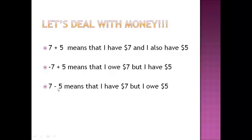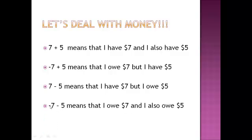Seven minus five: the positive sign is in front of seven and the negative sign is in front of five, which means I have seven dollars but I owe five dollars. Then negative seven minus five: the negative sign is in front of seven, meaning I owe seven dollars, and the negative sign is also in front of five, meaning I also owe five dollars.